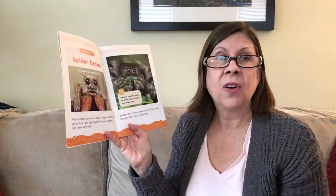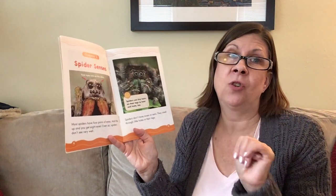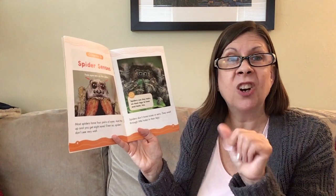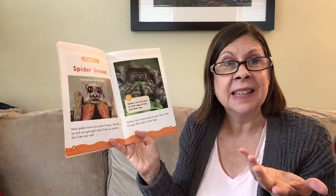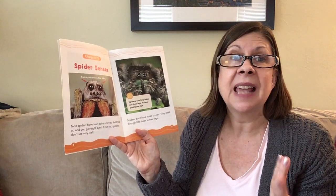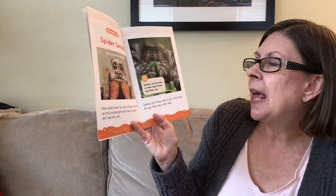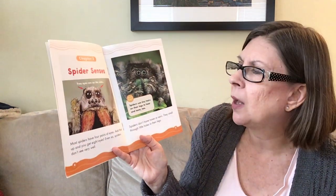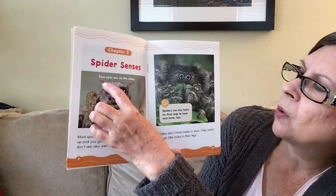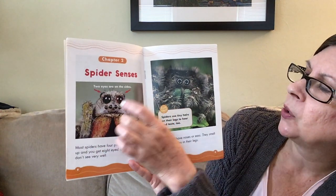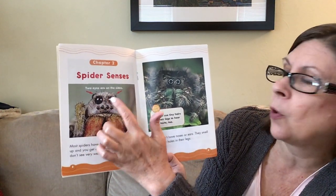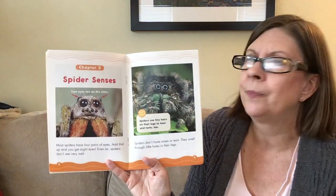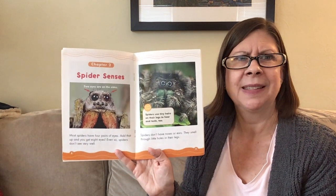Most spiders have four pairs of eyes, and a pair is two of something. So if spiders have four pairs, that means they have eight eyes — eight legs and eight eyes. Even so, spiders don't see very well with all their eyes. They have two eyes on the side, two big ones, and then six little eyes on the bottom, but they still can't see well. That's kind of funny.